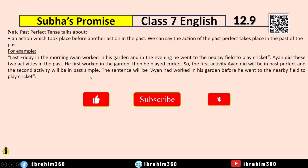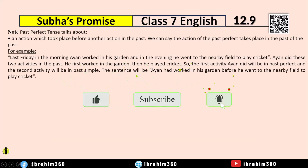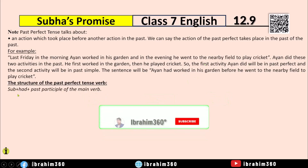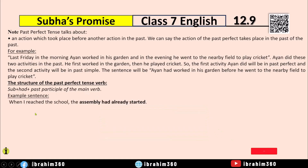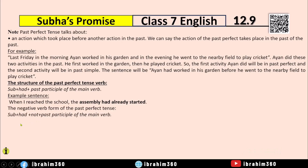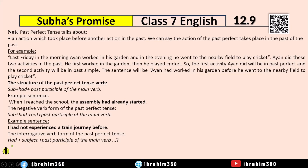The sentence will be: 'Iyan had worked in the garden before he went to the nearby field.' The structure of Past Perfect is: Subject + had + past participle of the main verb. For example: 'When I reached the school, the assembly had already started.' For negative: Subject + had + not + past participle. For example: 'I had not experienced a train journey before.' For interrogative: had + subject + past participle. For example: 'Had you won any prizes in the last annual sports competition?'